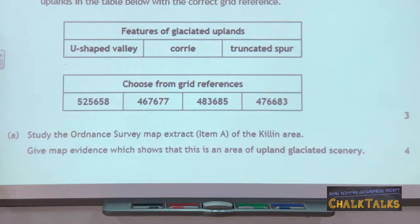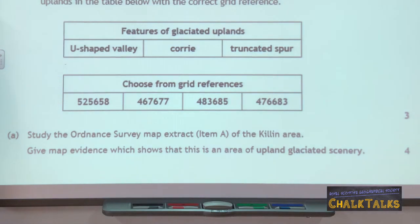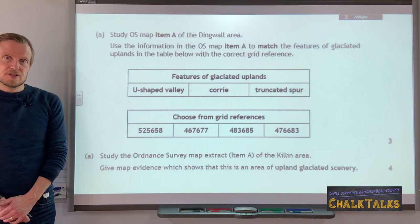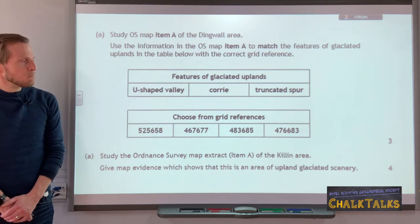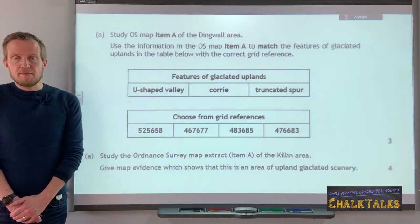In the second example of this type of question, it is worth four marks because it's a slightly higher-order skill. What you're being asked to do is use your map to identify any four different glacial landscape features and give the six-figure grid reference for those four features. These would include the Corrie, U-shaped valley, the Pyramidal Peak, the Arete, the Ribbon Lake, the Truncated Spur, or the hanging valley.